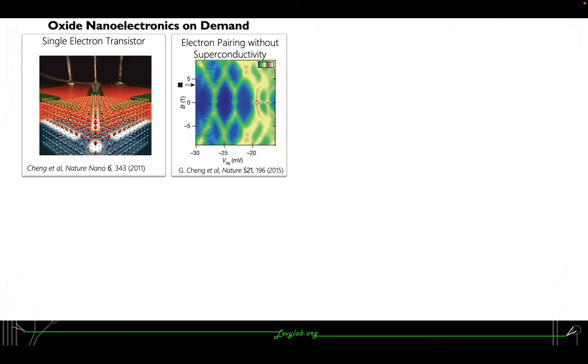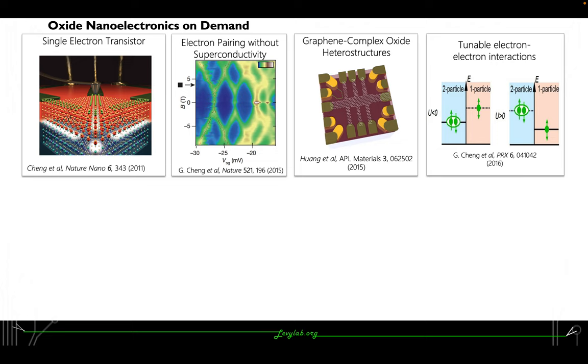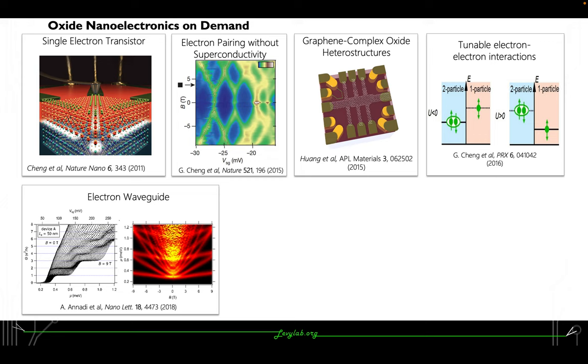We have graphene complex oxide heterostructures, and also there is observation of tunable electron-electron interactions.